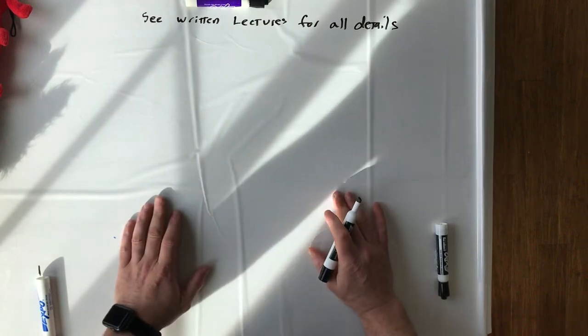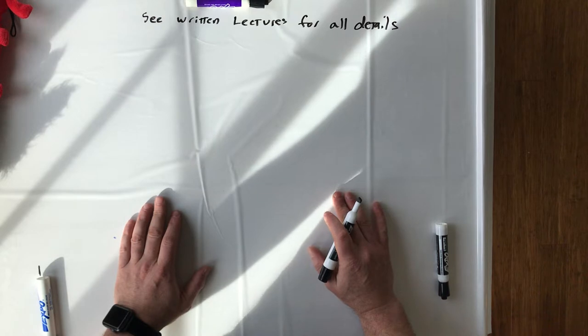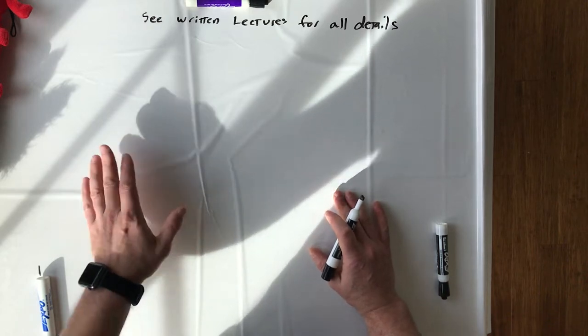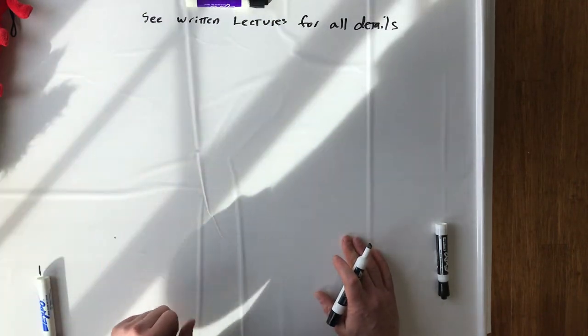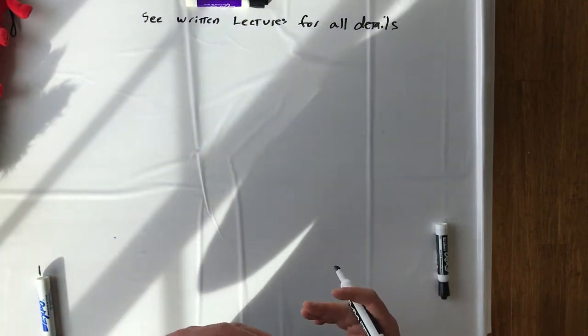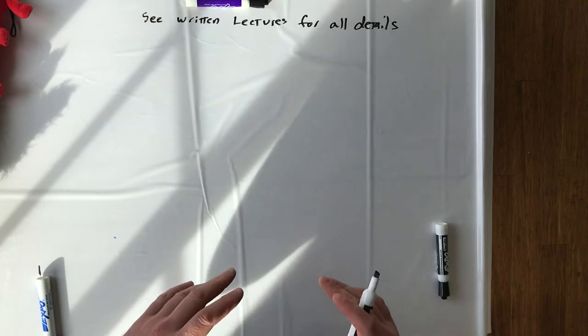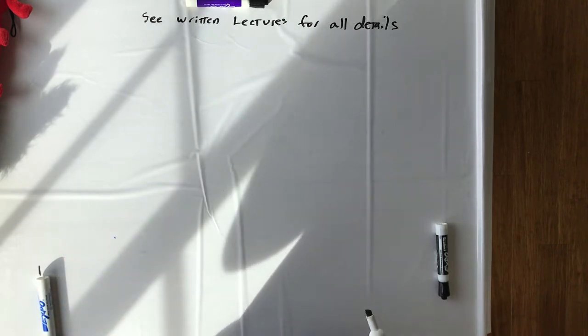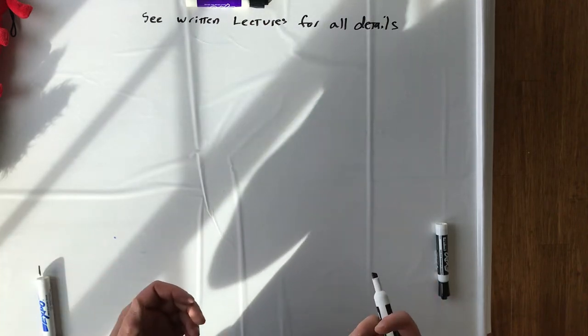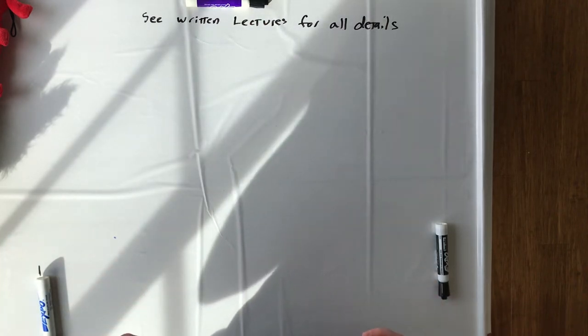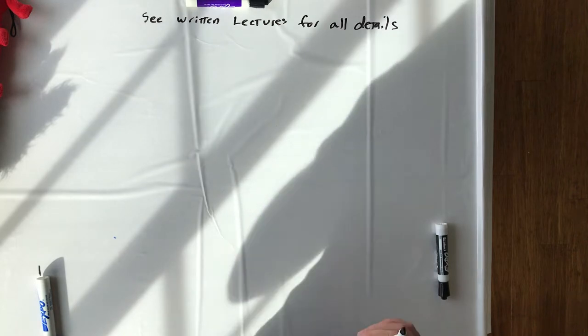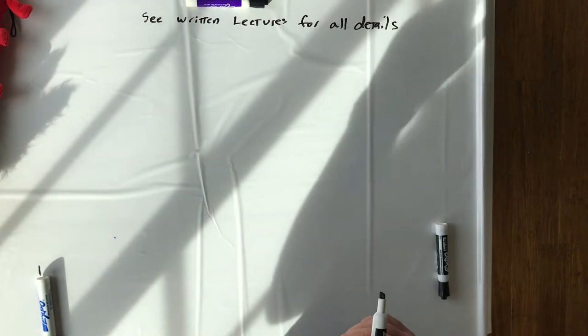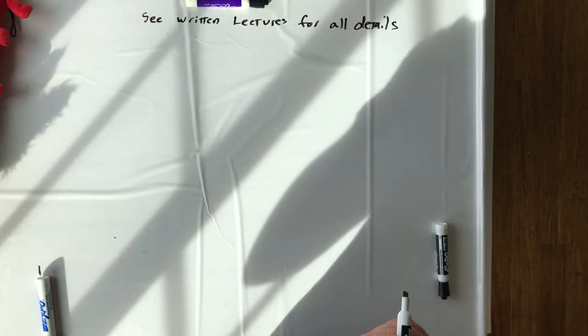Alright everyone, I just wanted to briefly do a quick version of the Prisoner's Dilemma. You'll definitely want to take a look at the written lectures for all the details, but I wanted to talk through it first because it can be a little hard to get your head around since it's not the normal way we think about things. Hopefully the audio quality on this one won't be as terrible as the other tries.